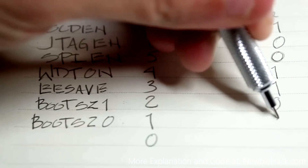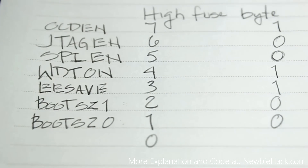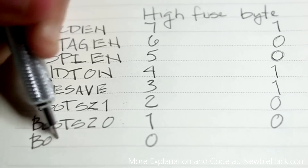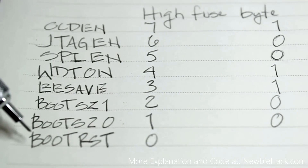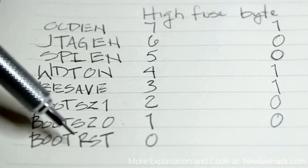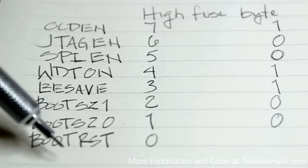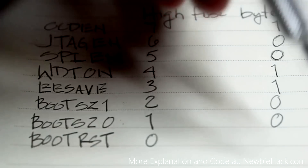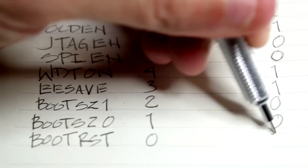Let's put the default in there. The last high fuse bit is boot reset. This fuse bit can tie your reset — the reset pin of the microcontroller — to the start of the boot memory location. This is unprogrammed as a default.